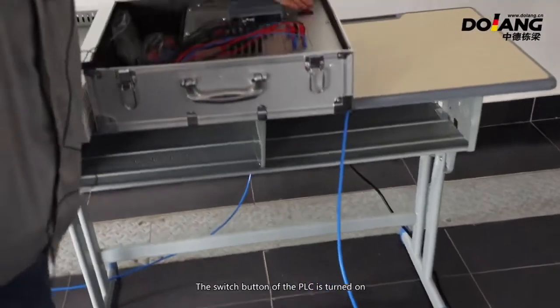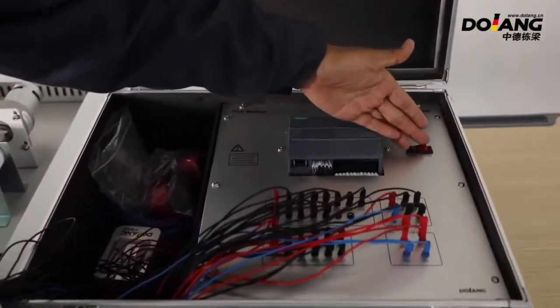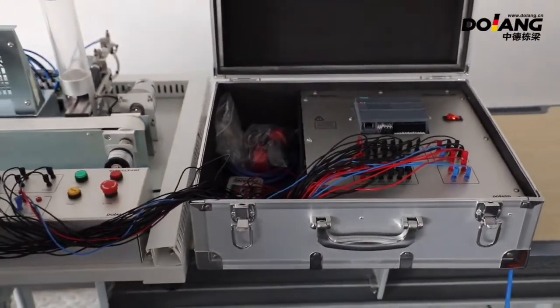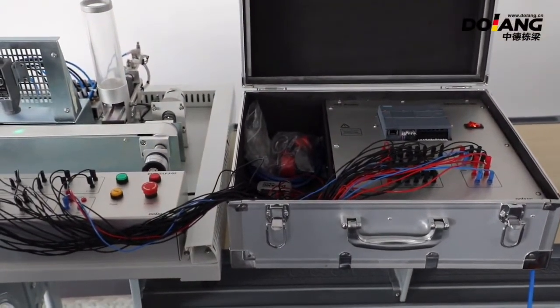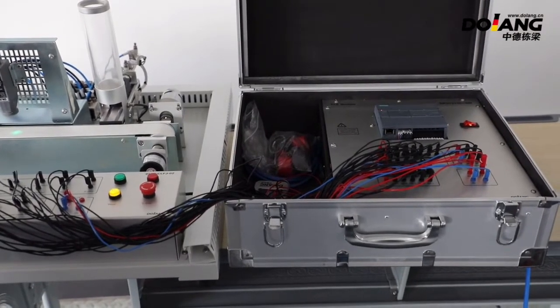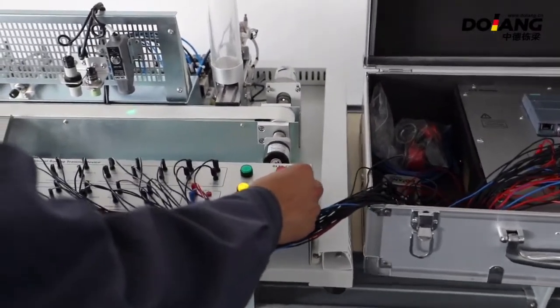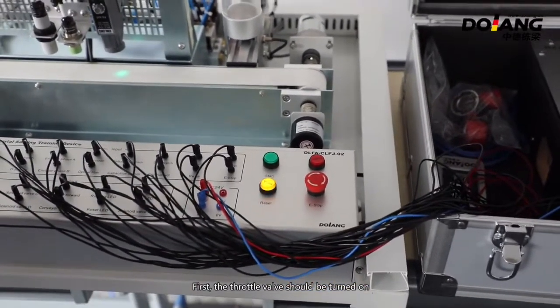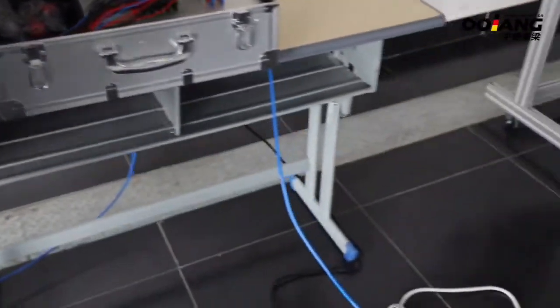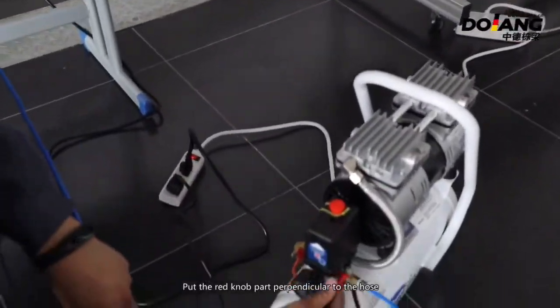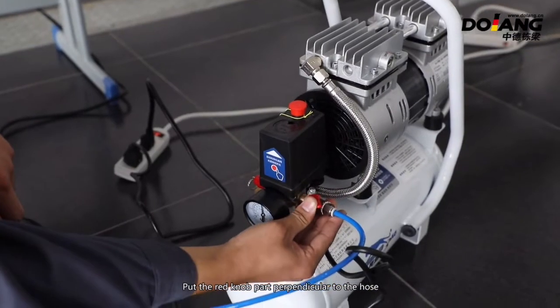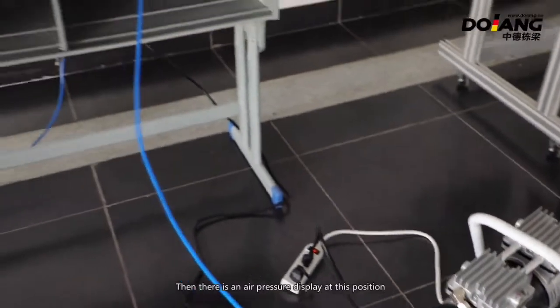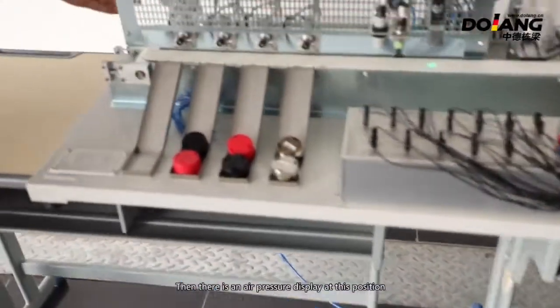The switch button of the PLC is turned on. Wait for the PLC to start. First, the throttle valve should be turned on. Put the right knob part perpendicular to the hose. Then there is air pressure displayed at this position.